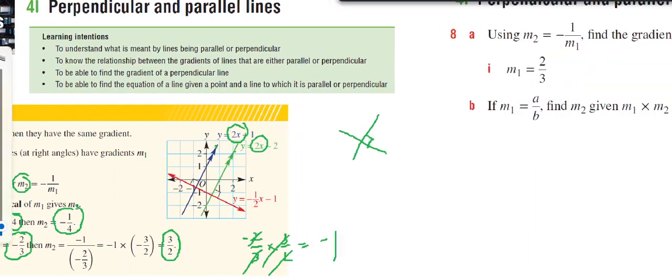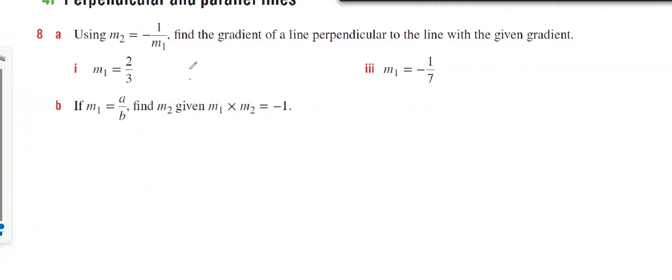Looking at question number 8, using this rule, if M2 is perpendicular to M1, then M2 equals... This is positive, so it's going to be negative, and that's 2 thirds, so it's going to be 3 on 2.